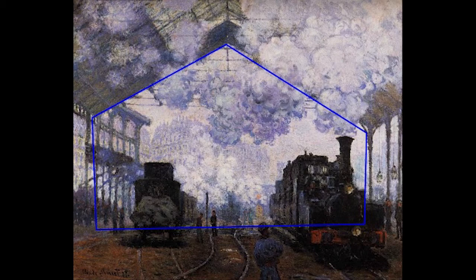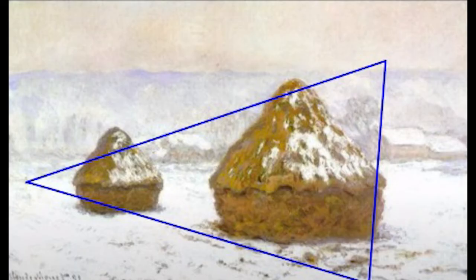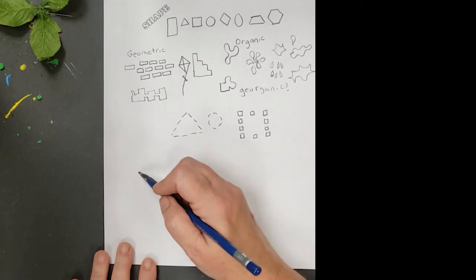Sometimes they're even just implied, like in this painting of Monet's, these two paintings of Monet's, they have implied shapes. The shapes aren't there at all.